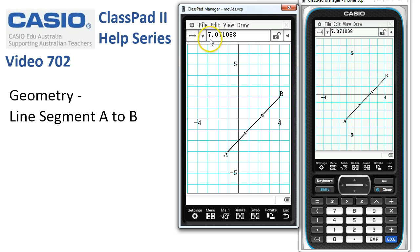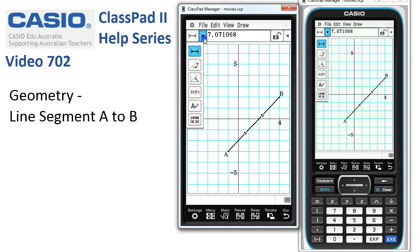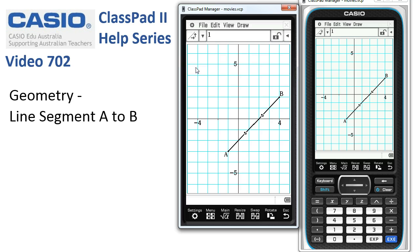As you saw, we can choose other features of the line. So we've got its length here, but also we could get its gradient, which is one. So you can see there.